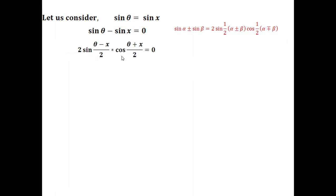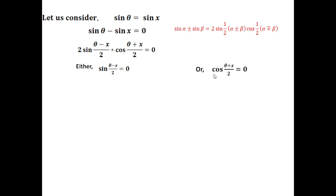Applying the formula to sin θ − sin x, we get 2 sin((θ − x)/2) · cos((θ + x)/2) = 0. There are only two possibilities: either sin((θ − x)/2) = 0 or cos((θ + x)/2) = 0. Since sin(nπ) = 0, comparing gives (θ − x)/2 = nπ, and after simplifying we get θ = 2nπ + x. Here 2n indicates an even number.